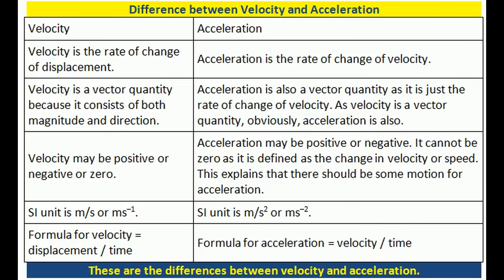Difference between velocity and acceleration: Velocity is the rate of change of displacement; acceleration is the rate of change of velocity. Velocity is a vector quantity because it consists of both magnitude and direction. Acceleration is also a vector quantity, as it is the rate of change of velocity — and since velocity is a vector quantity, obviously acceleration is also a vector quantity. Velocity may be positive, negative, or zero; acceleration may be positive or negative.